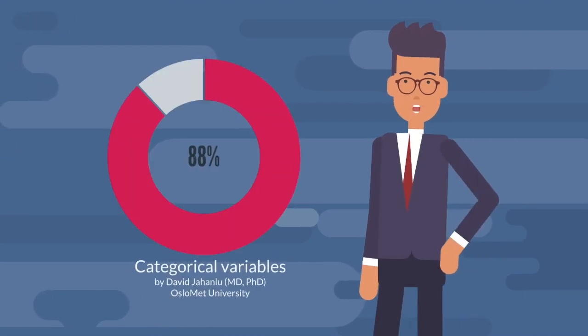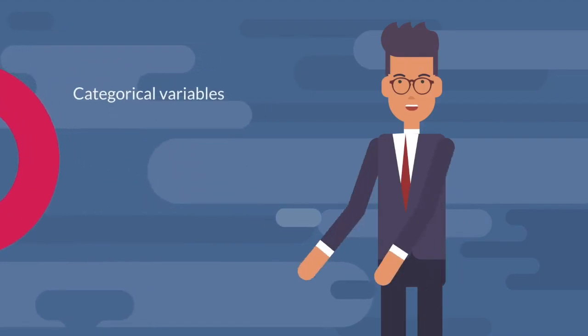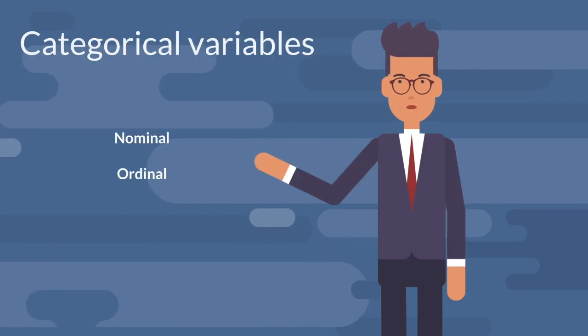You remember we said that categorical variables can be explained easily by percentages. You should also learn that we have two types of categorical variables: nominal and ordinal.